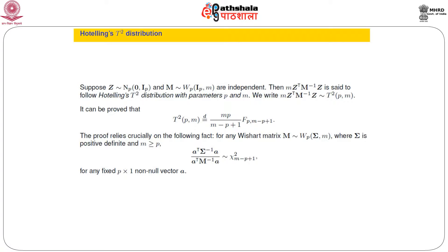We are talking about the Hotelling T-square distribution—it is not the statistic. We have a multivariate normal distribution Z with mean equal to the zero vector and dispersion matrix equal to the identity matrix of order P. Capital M has a Wishart distribution with degrees of freedom M and scale matrix I_P, the identity matrix of order P. We look at the object Z' M⁻¹ Z, which should remind us of the expression for the Hotelling T-square statistic.